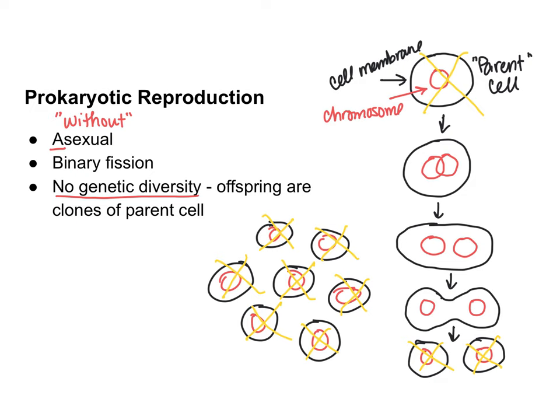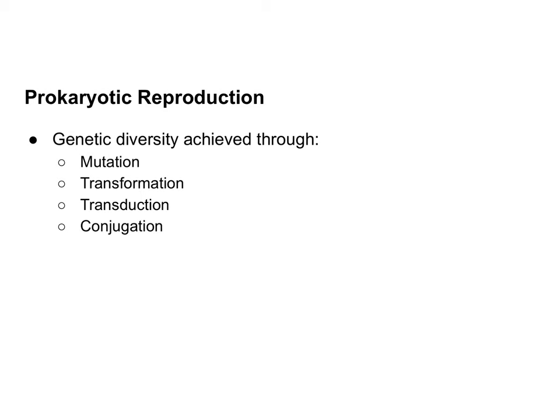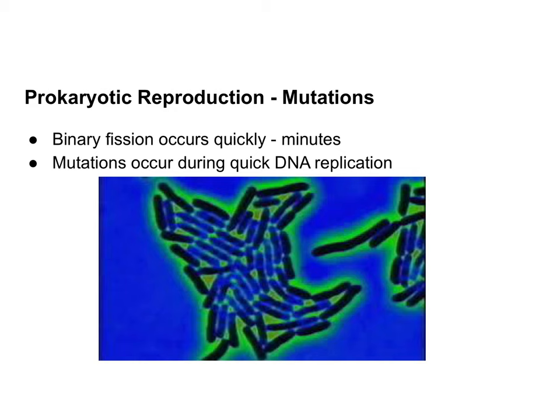We're going to talk about those ways on the following slides. Here are four ways that prokaryotes increase their genetic diversity. One way is because binary fission is a very quick process.